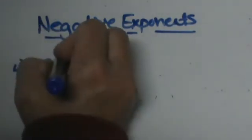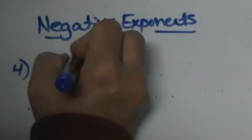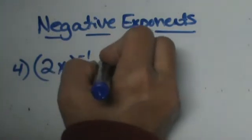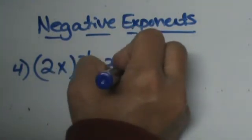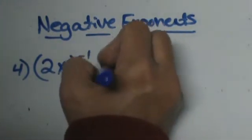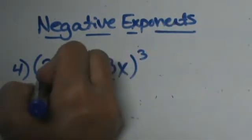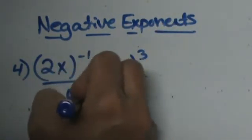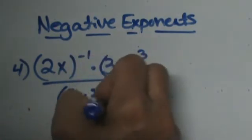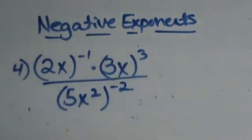Let's say you have 2x to the negative first times 3x all to the third over 5x squared to the negative second.